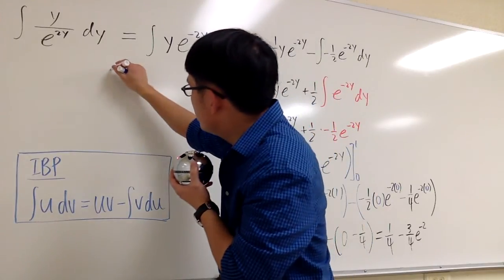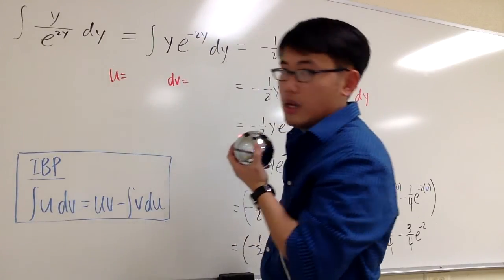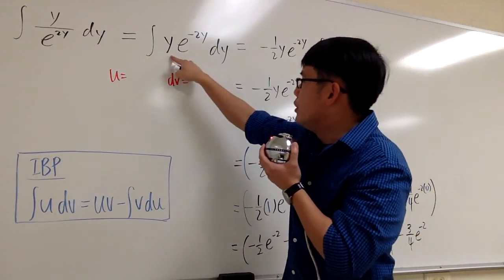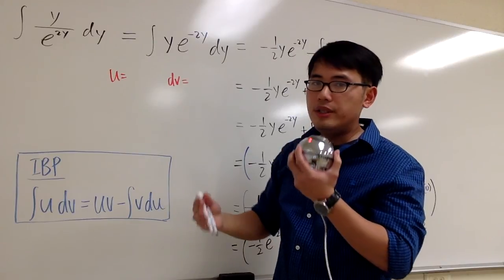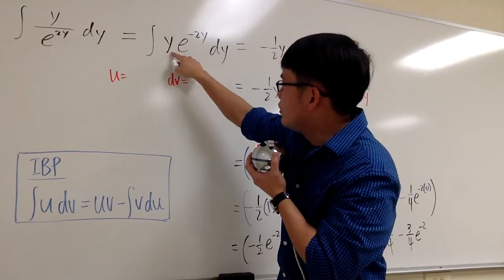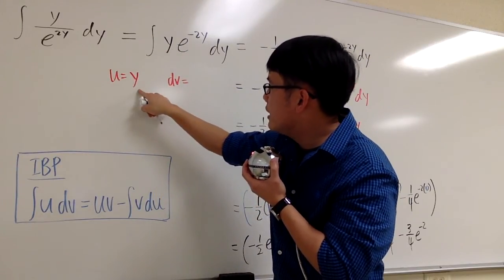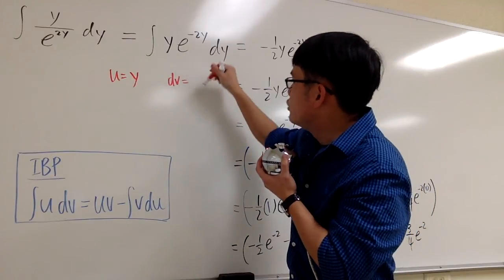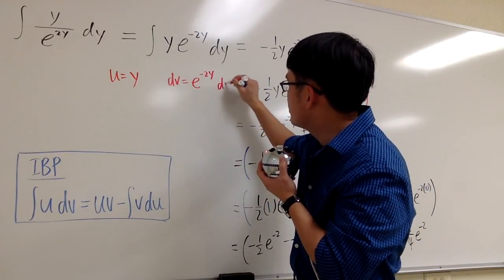So let's begin. Let's pick something for u and something for dv. We have two things, a polynomial and an exponential function. They're equally easy to integrate or to differentiate. In that case, let's save the polynomial to be differentiated. So write down u is equal to y. And then we'll integrate the exponential part, which is e to the negative 2y. And now we have to attach dy.